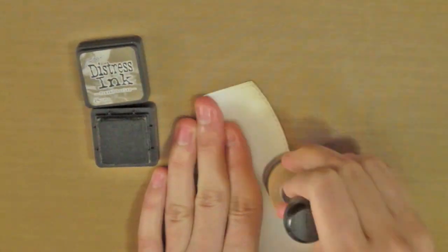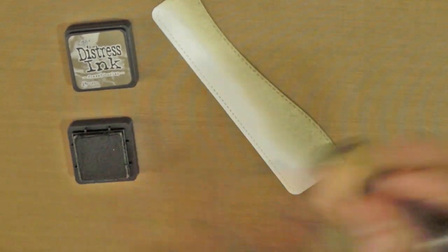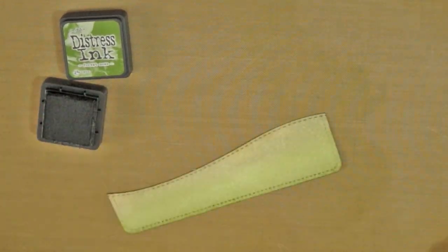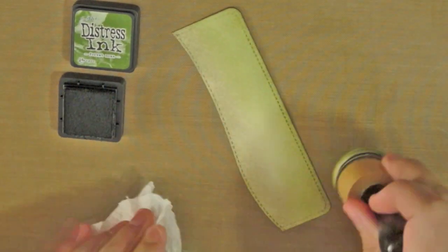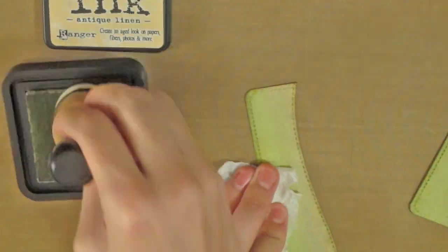Now I will color the top of the hills using my Frayed Burlap Distress Ink Pad and a round blending tool. For the bottom part, I will use the forest moss distress ink, blending both colors in the middle. I am using a dry paper towel to hold the paper so that I do not leave my fingerprints on it.